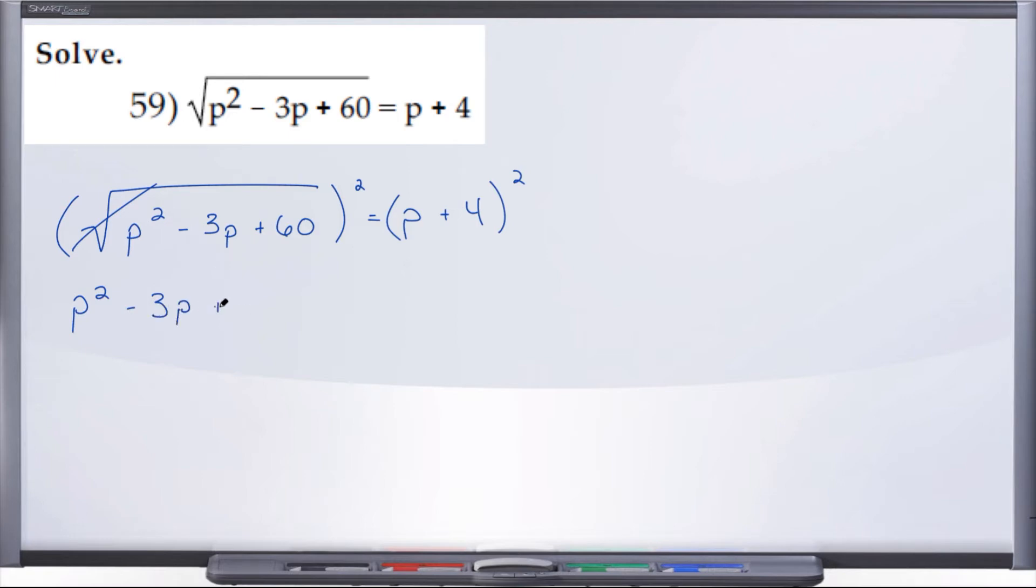So p squared minus 3p plus 60 equals the binomial p plus 4 squared. When we square something, we have to write it out twice and FOIL. P times p gives us p squared, p times 4 gives us 4p, 4 times p gives us plus 4p. When we combine these like terms, we get plus 8p. And lastly, 4 times 4 gives us plus 16.